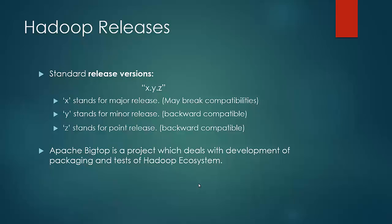The other projects in the ecosystem are Pig, Hive, HBase, Zookeeper, Sqoop, Flume, etc., which we would look at later in the course. These projects have their own releases, and a particular version would be compatible only with a few versions of Hadoop. So it gets highly complicated to deploy an ecosystem where all components are compatible with each other.